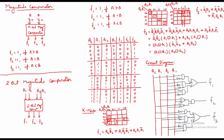For A=01 I also compare with all 4 combinations of B: 00, 01, 10, 11. Similarly for A=10 and A=11, four combinations each. Now let us check the values of F1, F2, F3. For A=00 and B=00, they are equal so F2=1 and F1, F3 are 0. For A=00 and B=01, A is less than B so F3=1, the other two are 0. For A=00, B=10, A is again less than B so F3=1, the others are 0. For A=00, B=11, A is less than B so F3=1, the others are 0.